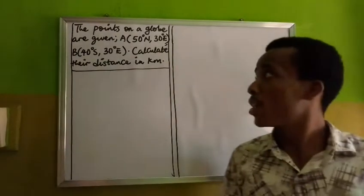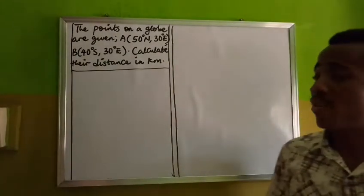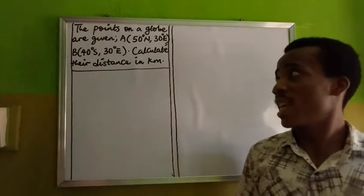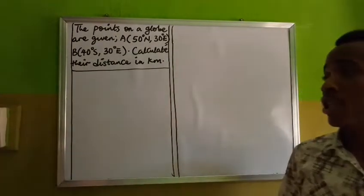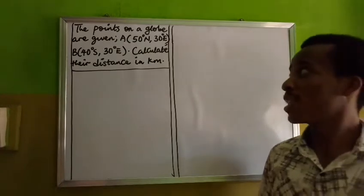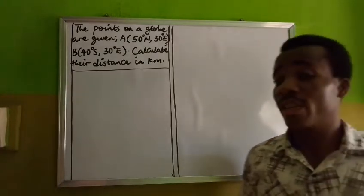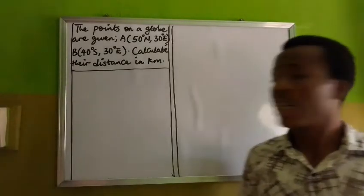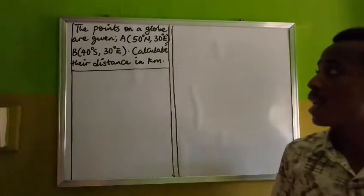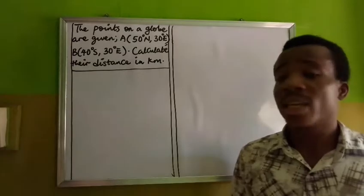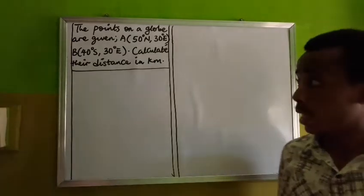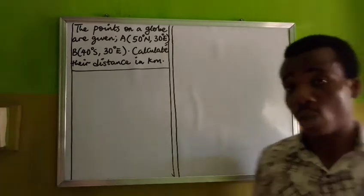This question says the points on a globe are given: A, which is 50 degrees north, 30 degrees east, then B, 40 degrees south, 30 degrees east. Calculate the distance in kilometers.